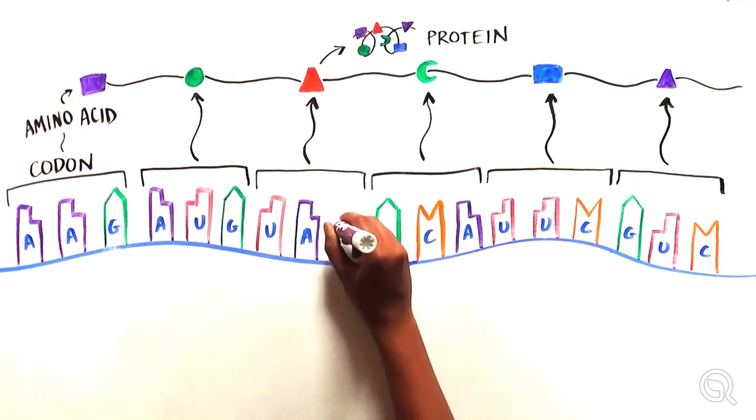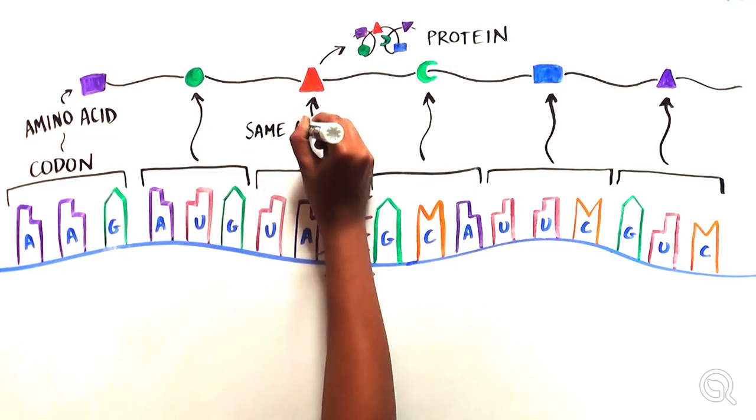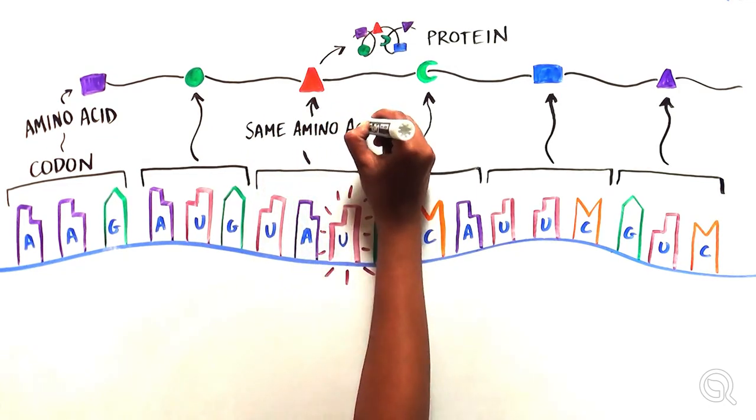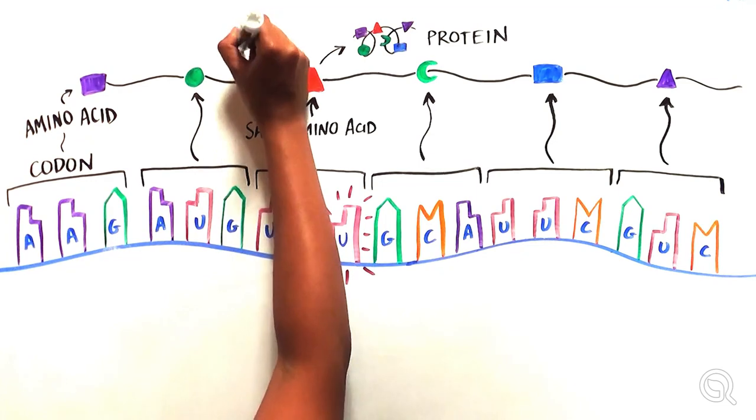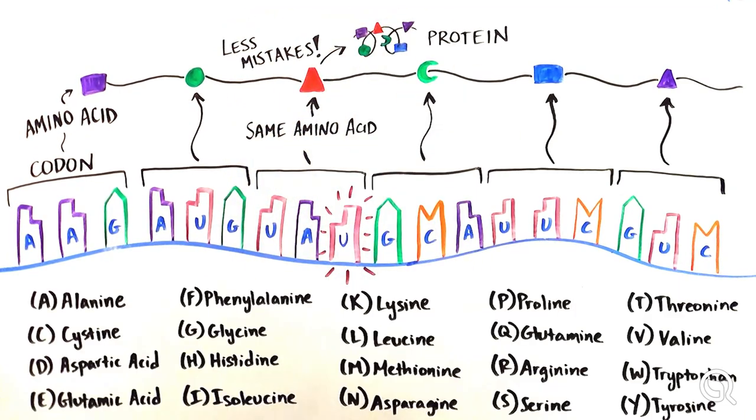And this redundancy is important. Among other things, it provides an extra layer of safety in case the wrong nucleotide base is placed in a particular location, which helps ensure that fewer mistakes are made during the translation process. Along the bottom here are the amino acids shown in their simple single-letter form.